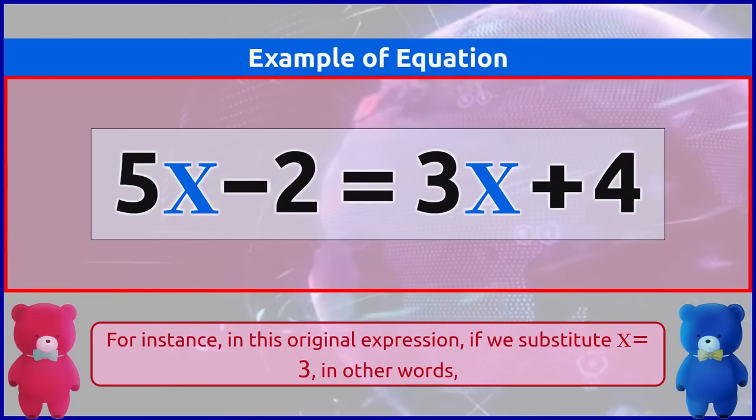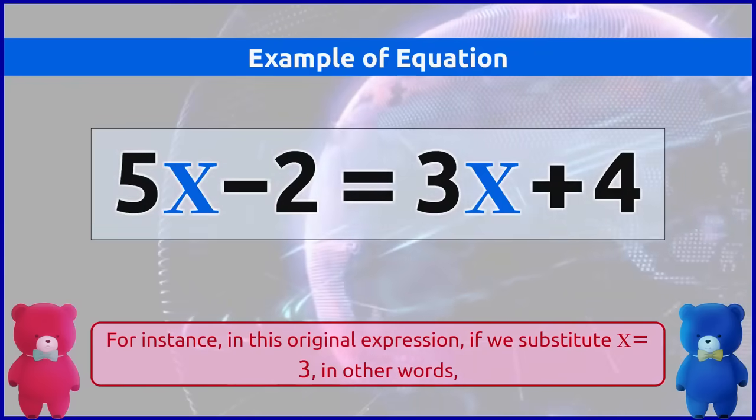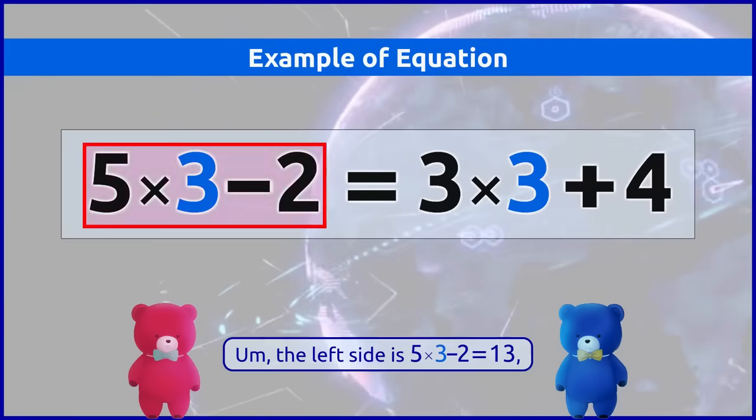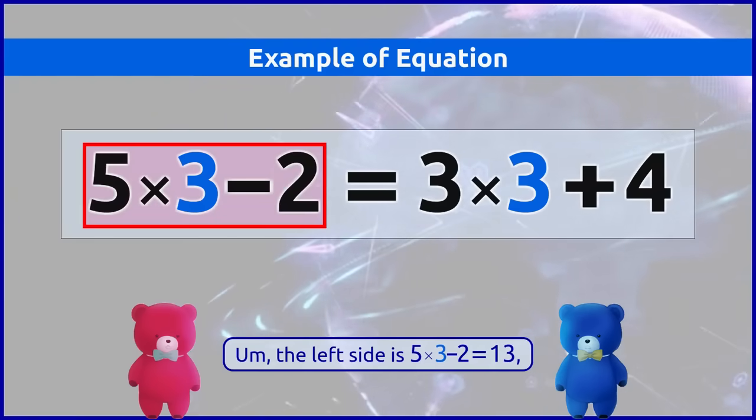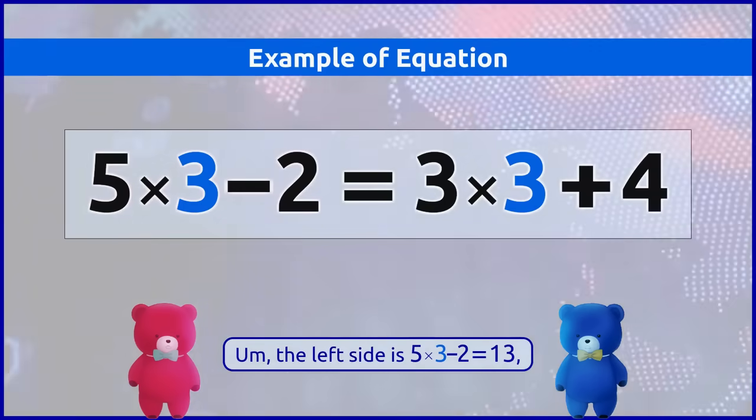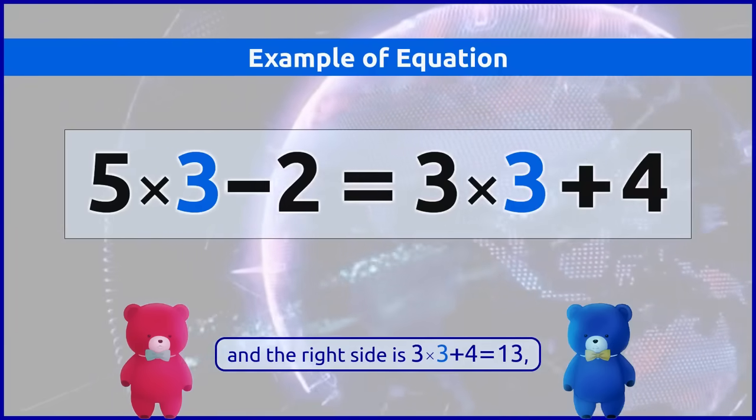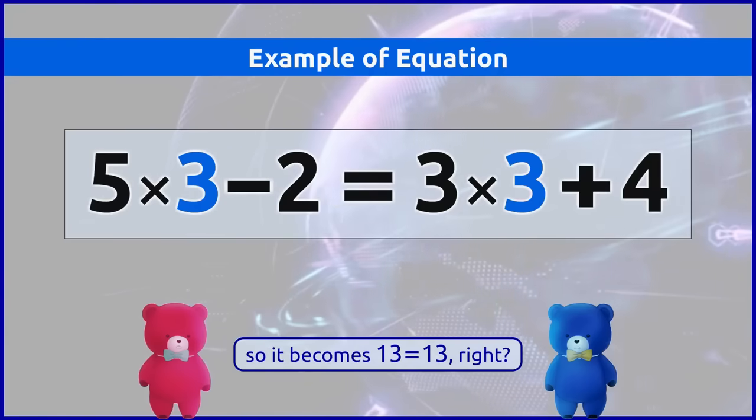Replace x in the expression with 3, what does the expression become? The left side is 5 times 3 minus 2 equals 13, and the right side is 3 times 3 plus 4 equals 13. So, it becomes 13 equals 13, right?